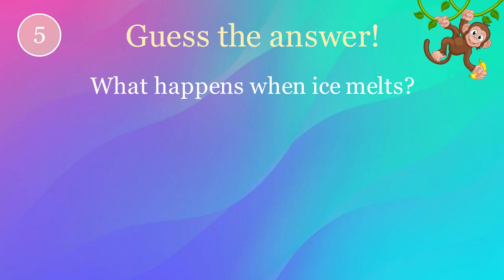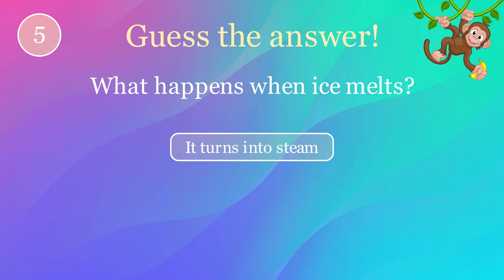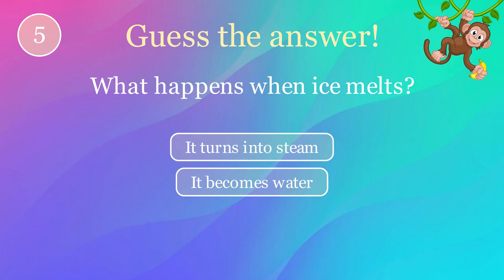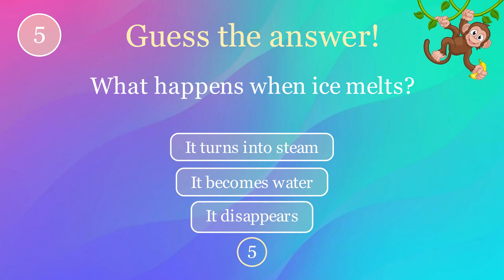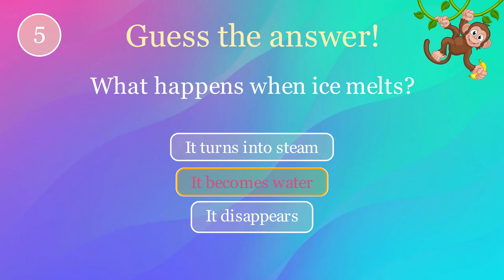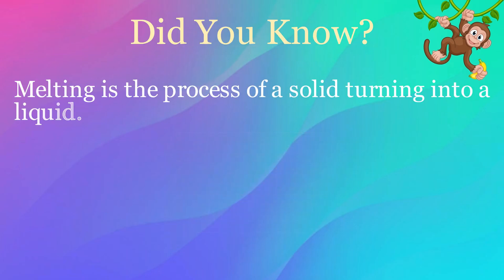What happens when ice melts? Options: it turns into steam, it becomes water, it disappears. The correct answer is it becomes water. Here's an interesting fact: melting is the process of a solid turning into a liquid.